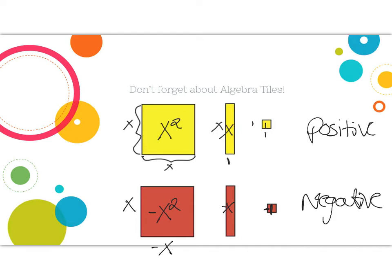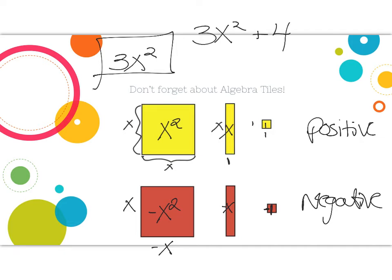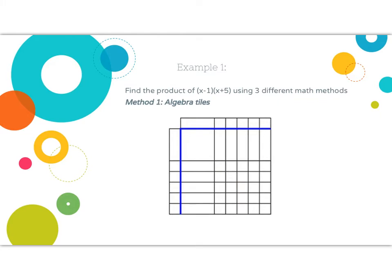Also a reminder: a monomial is a term to describe one thing, so like 3x squared would be a monomial. As soon as I add one more thing to it — so 3x squared plus 4 — that's now considered a binomial because there are two terms. Our goal today is to multiply two binomials together. So x minus one is considered a binomial because we cannot collapse those two into one term — they are distinct, not like terms. And x plus five — we're going to multiply x minus one by x plus five using three different methods.